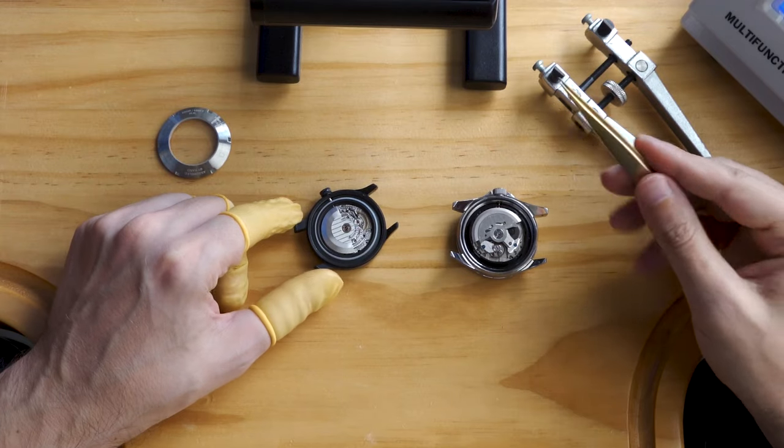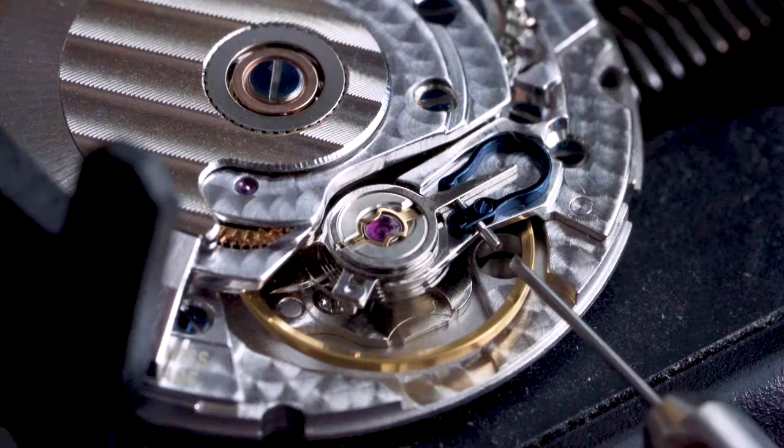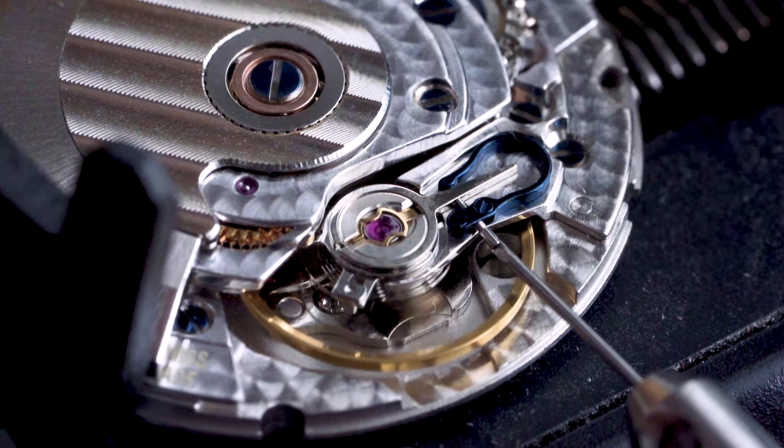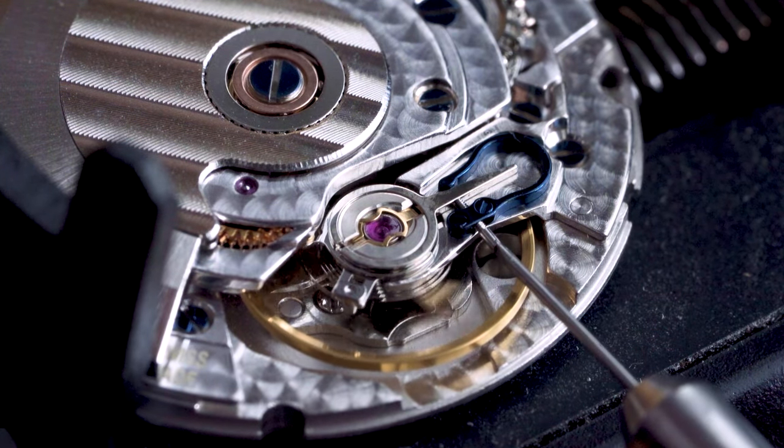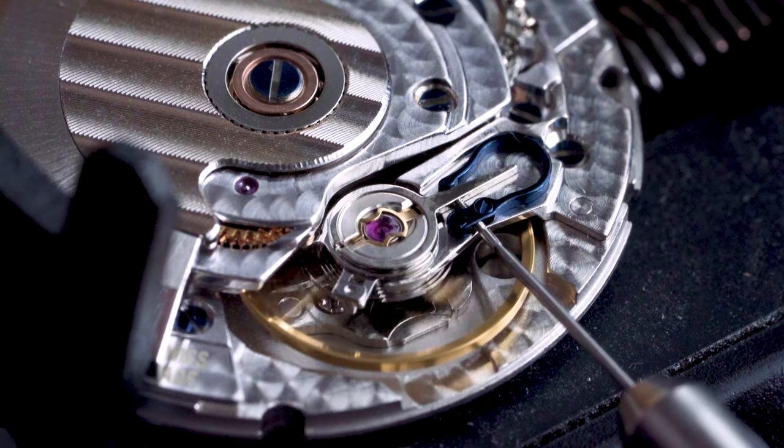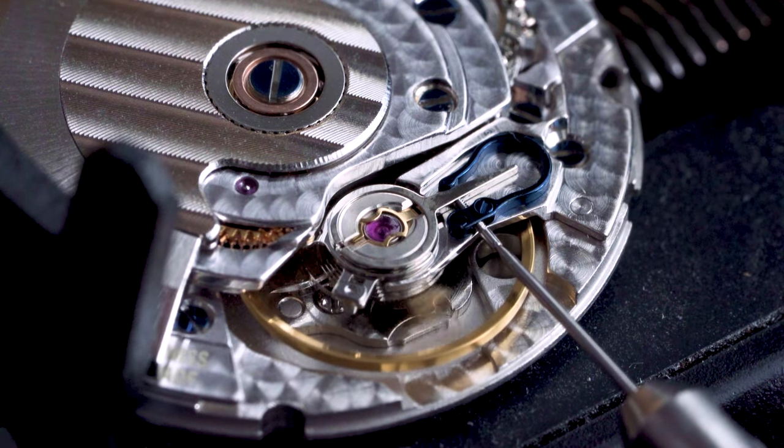For some other movements like the ETA2824 or SW200, they may be equipped with fine tuning mechanisms, such as a swan neck or a fine regulation screw. Small adjustments can be made via tuning the screw, making it much easier to fine tune the rate.